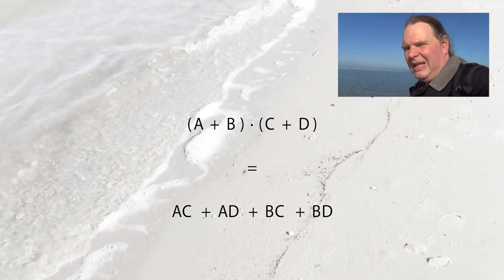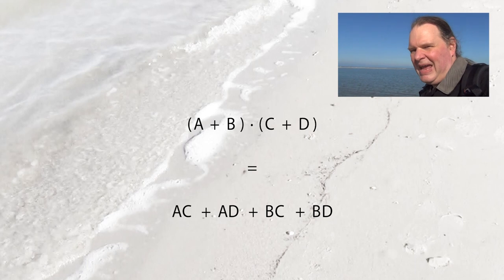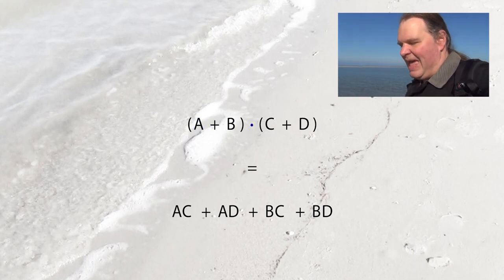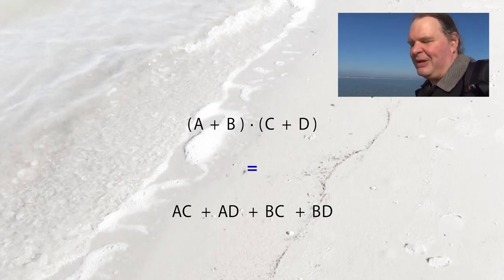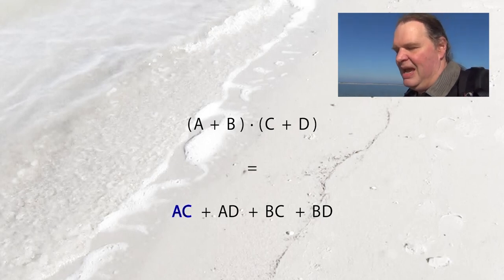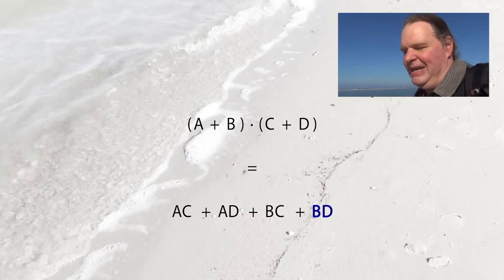To see this, we have to read the multiplication as an AND, and we have to read the addition as an OR. For instance, we can read this as: somebody comes to you and asks, do you want an A or a B? And then somebody comes to you and asks, do you want a C or a D? So what the equation tells us is what the outcomes are after you have made your two choices — you can either end up with A and C, A and D, B and C, or B and D.